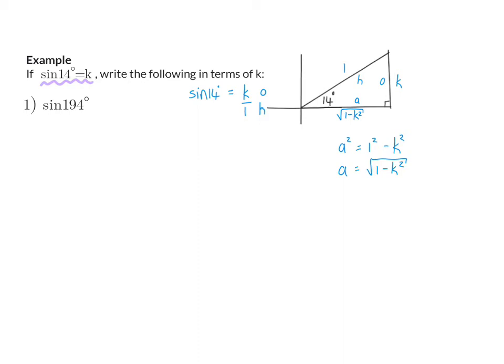We are going to start off with the questions we used while we did reduction formulas. 194 is in the third quadrant, and that is where sin is negative. Now we need to ask ourselves 180 plus what will give me 194, and that is 14. We already know that the ratio for sin of 14 is k, so now it will be minus k.